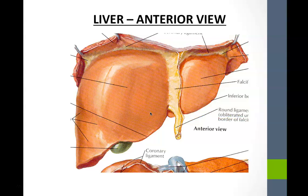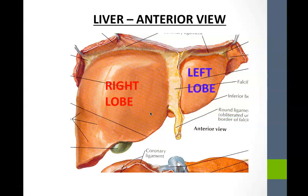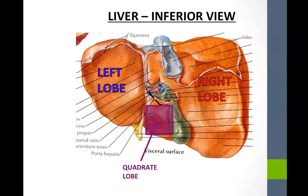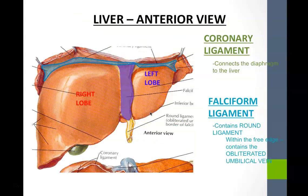Moving to accessory organs of the digestive system, starting with the liver: the anterior view shows four lobes, with the right lobe being the largest. To see the other lobes, we look at the inferior view, where we find the quadrate lobe — quad meaning four-sided, found more anteriorly (Q for quadrate, A for anterior) — and the caudate lobe, a tail-like lobe found posteriorly, since caudate means tail.